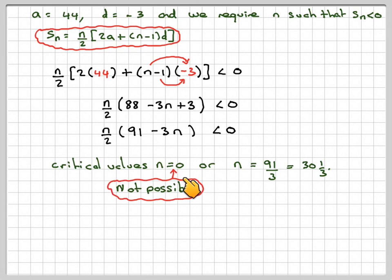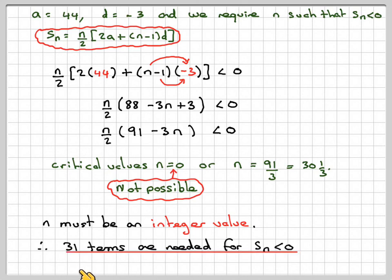Well, N equals 0 is just not possible because you won't have an arithmetic sequence, and therefore, we want integer values. So the first integer value such that SN is less than 0 is going to be 31. So 31 terms are needed for the sum to become negative.